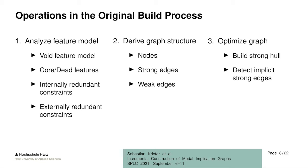Finally, we optimize the graph by building the strong hull — adding all transitive strong edges to speed up the traversal process later. We also detect implicit strong edges, which might be due to some redundant constraints. A weak edge may be transformable into a strong edge because of the internal constraints of the feature model, which again speeds up traversal later by enabling more logical deductions and fewer SAT solver calls.